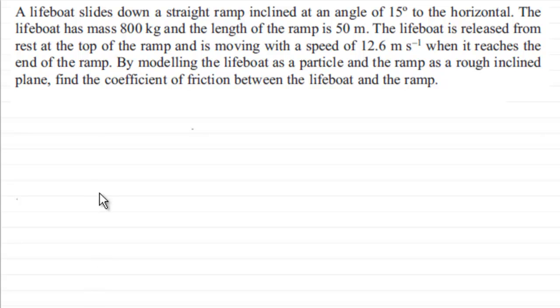What we've got here is a lifeboat that slides down a straight ramp inclined at an angle of 15 degrees to the horizontal. The lifeboat has a mass of 800 kilograms and the length of the ramp is 50 meters. The lifeboat is released from rest at the top of the ramp and is moving with a speed of 12.6 meters per second when it reaches the end of the ramp. By modeling the lifeboat as a particle and the ramp as a rough inclined plane, we've got to find the coefficient of friction between the lifeboat and the ramp.